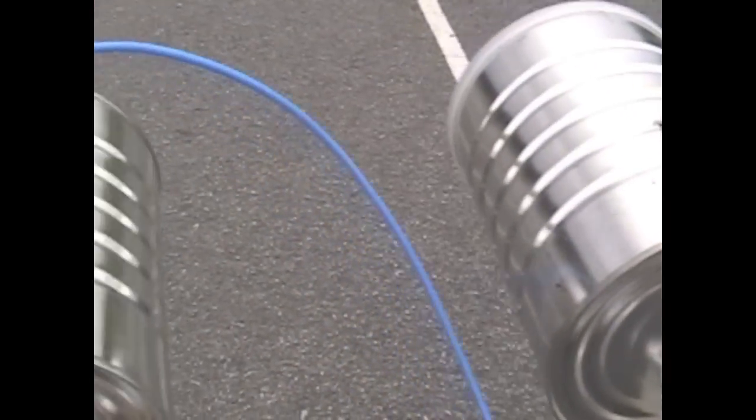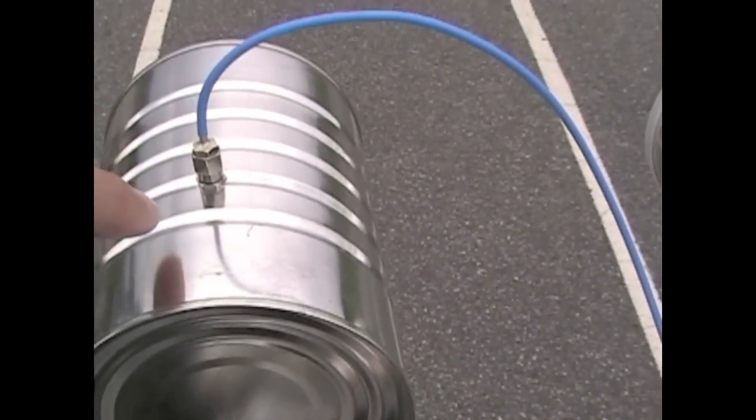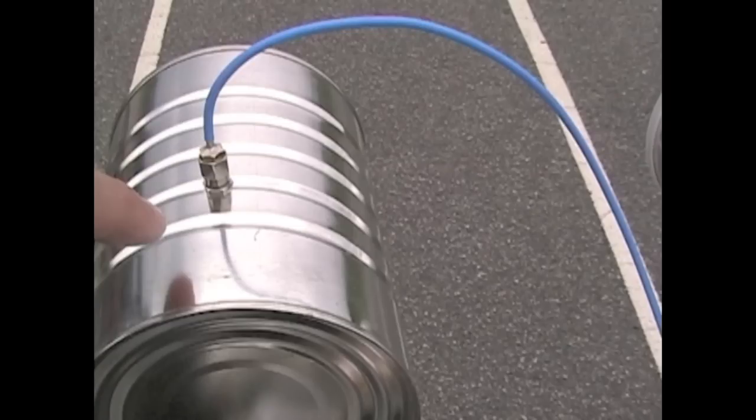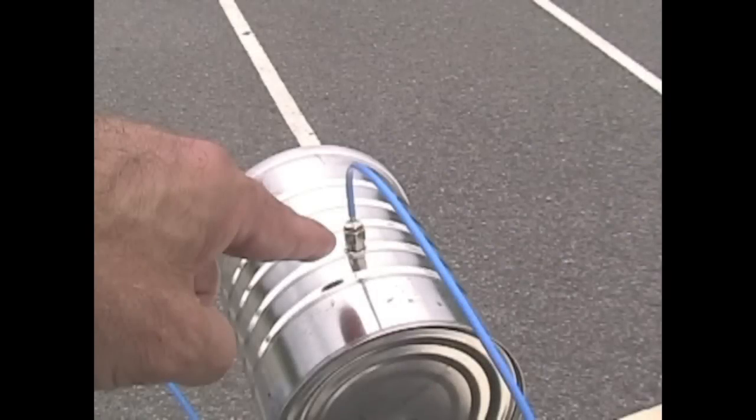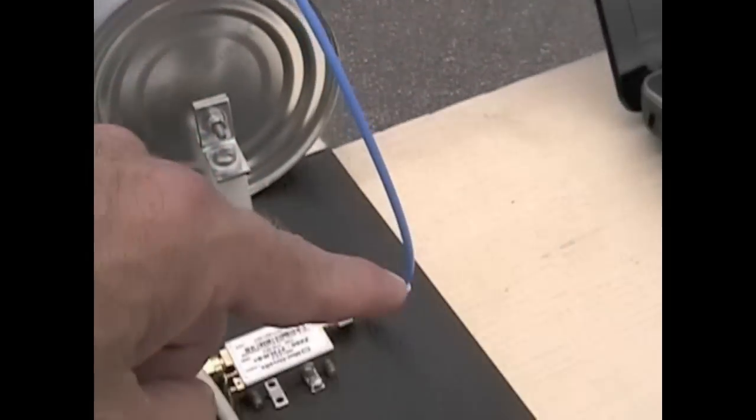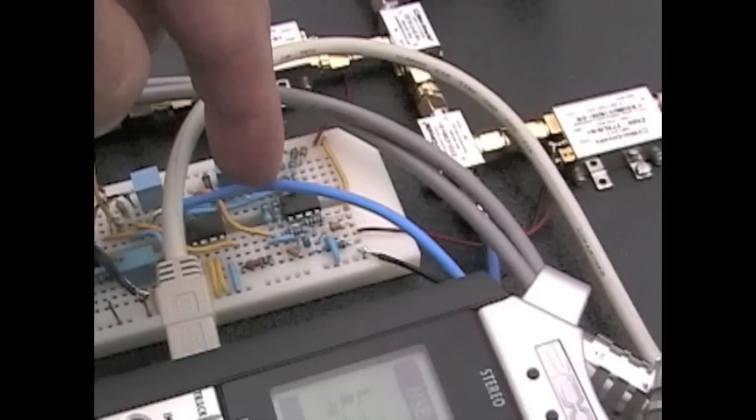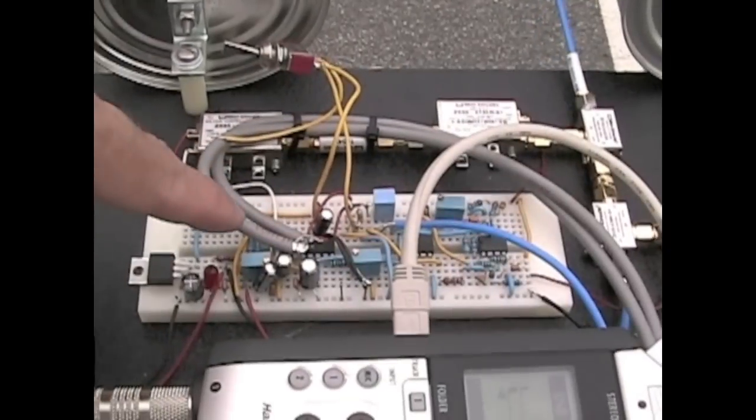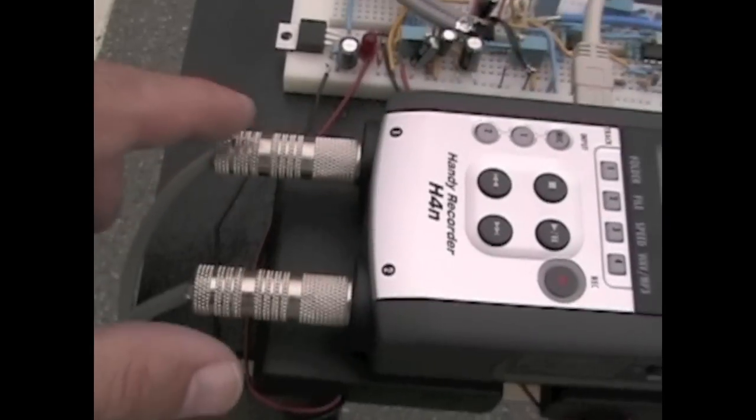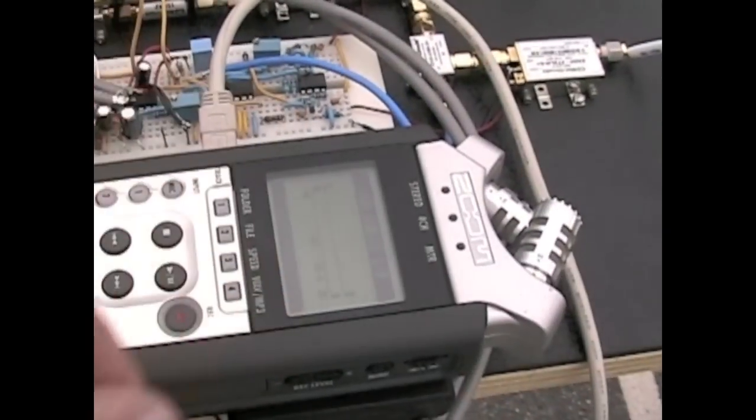So part of the signal goes to this antenna, the transmitting antenna, and part of the signal gets fed into this mixer. From the receive antenna here, the signal goes into another amplifier, is amplified and mixed. It comes through this wire here onto the board, and then the audio comes out and into the microphone inputs and into the zoom recorder.